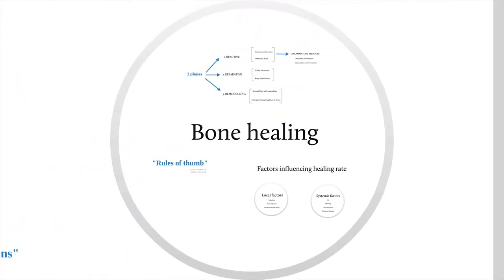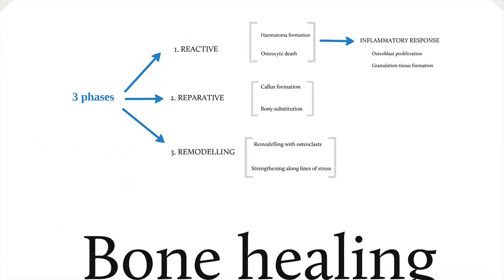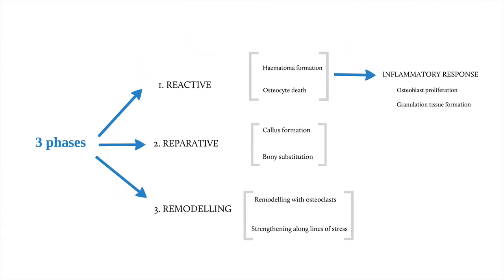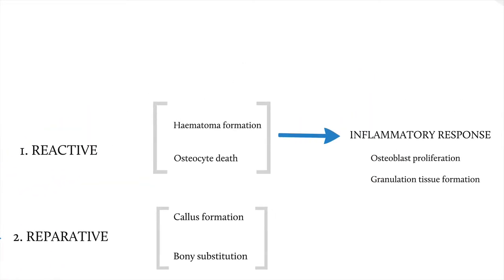There are three phases of bone healing in a traditional cortical bone fracture. The reactive phase: the broken bone and torn capillaries bleed, and a haematoma is formed. Osteocytes at the fracture ends die and release inflammatory mediators along the organising haematoma. This inflammation stimulates the proliferation of osteoblast precursors, particularly from the periosteum, and this is granulation tissue formation.